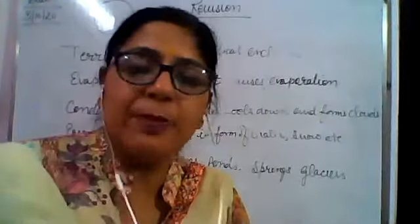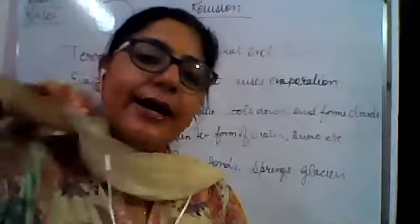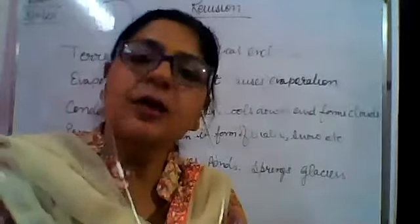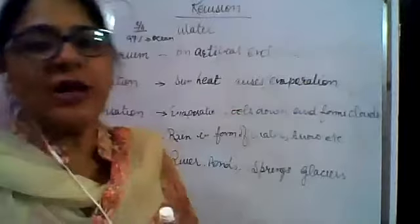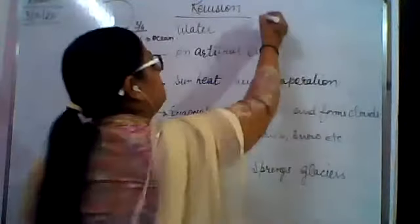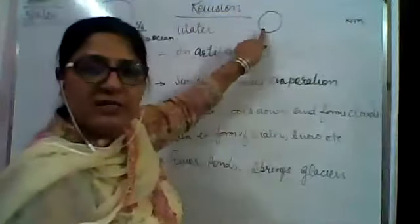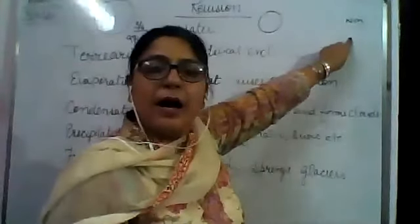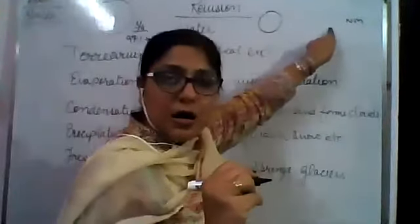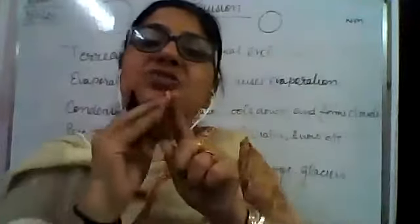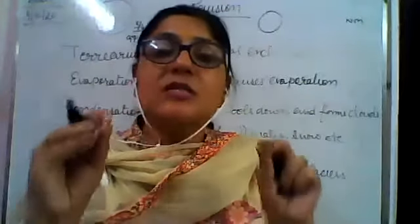Tides are of two types: neap tide and spring tide — that is, low tide and high tide. Spring tide is considered a high tide. High tide occurs when the sun, moon, and earth are all in a straight line, during either a full moon or a new moon. Then high tides occur twice a day — that is called spring tide.